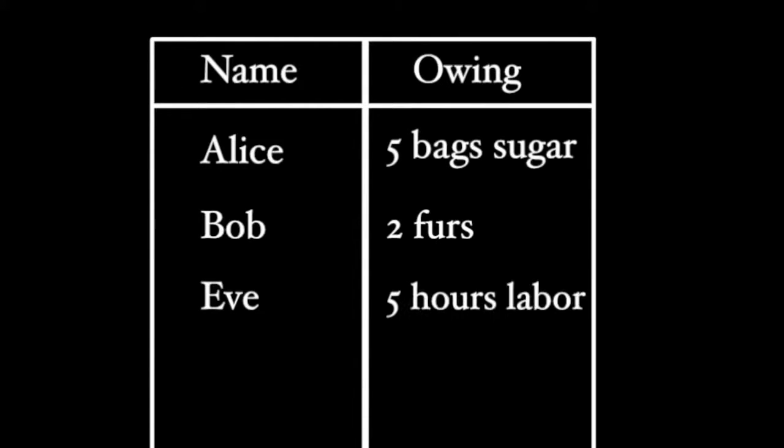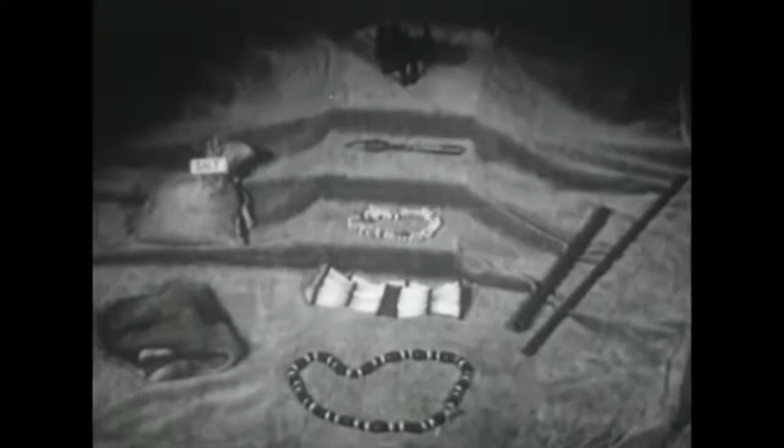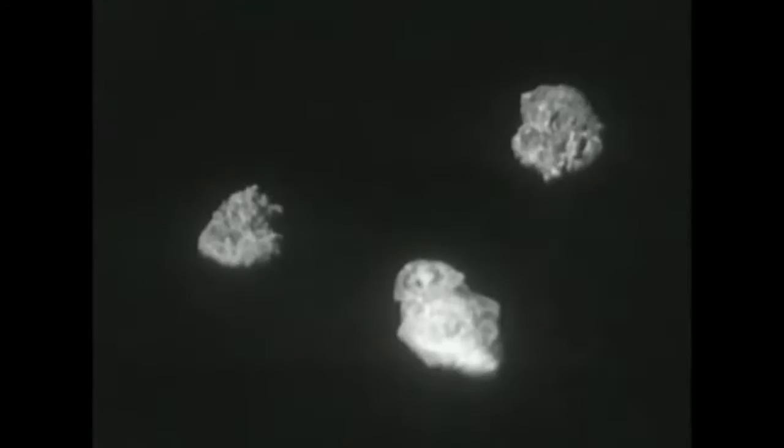This is what we call digital money, money which takes the form of written symbols or digits. But this kind of written money only works if we trust the people we are making promises with. And so when humans traveled to distant regions to trade with people they've never met and may never meet again, they used physical money instead. This allowed them to settle trades immediately with no trust involved. And of all the kinds of physical money we've used throughout history, there is one pattern which emerges. We ended up using some form of treasure, often a rare rock.